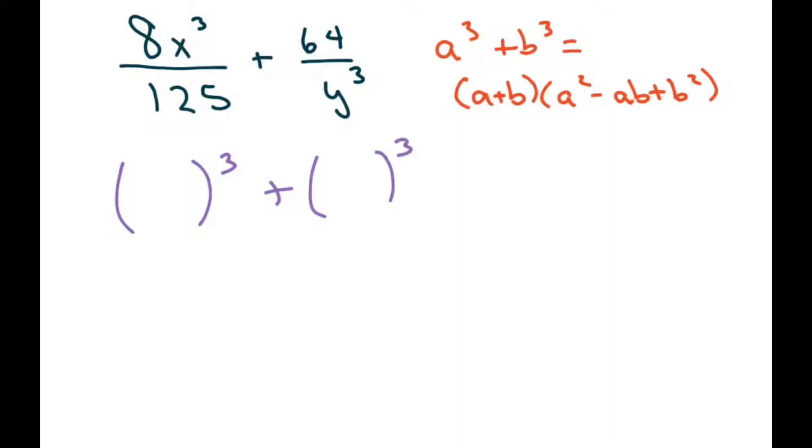And when you put that in, you get 2x divided by 5. If you cube that out, you get that back, and this will be 4 divided by y. And then I just use my formula here, your a equals 2x over 5, and your b equals 4 divided by y.